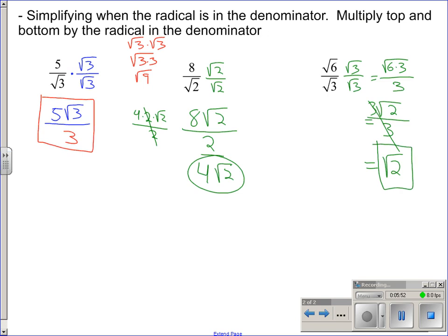The other way we could have done this. When you're taking the square root and dividing it by another square root, you can write them as the square root of a single fraction. 6 over 3. 6 divided by 3 is 2. So, we've got the square root of 2. Same answer. Different way to look at it.